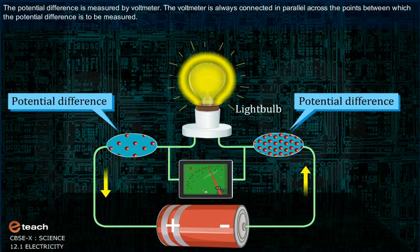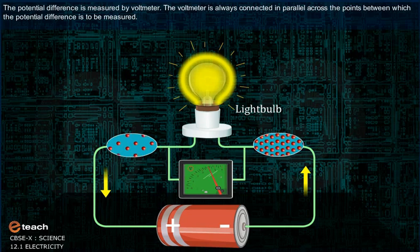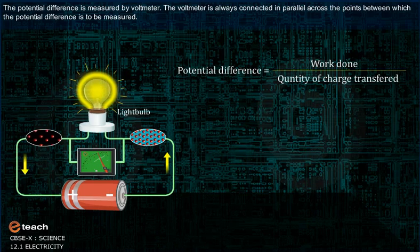The potential difference is measured by a voltmeter. The voltmeter is always connected in parallel across the points between which the potential difference is to be measured.